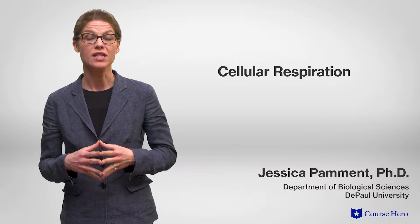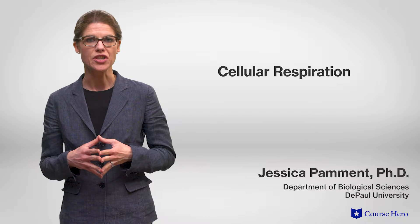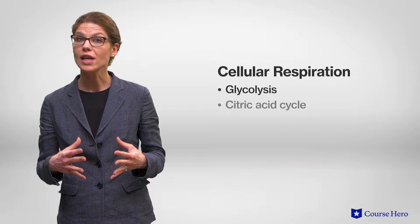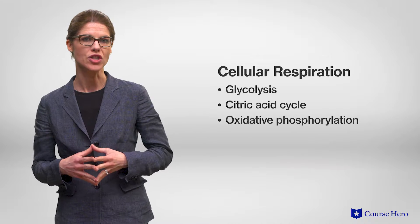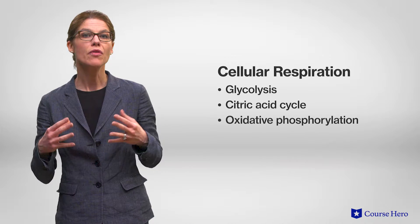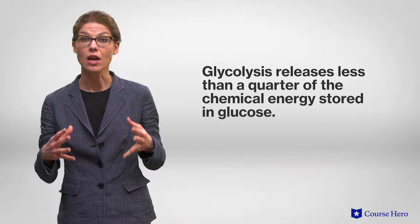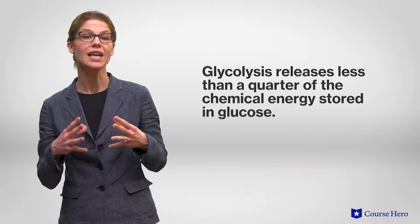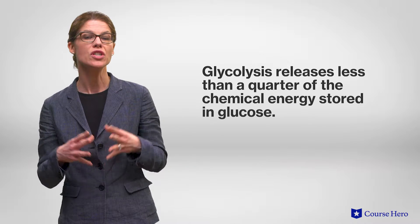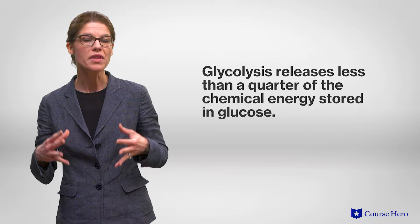Cellular respiration consists of three stages: glycolysis, the citric acid cycle, and oxidative phosphorylation. The first stage, glycolysis, releases less than a quarter of the chemical energy stored in glucose. Most of the energy remains stored in the product of glycolysis, pyruvate.